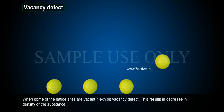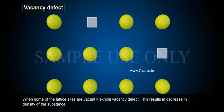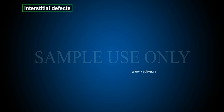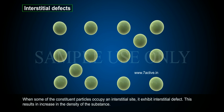Vacancy defect: When some of the lattice sites are vacant, it exhibits a vacancy defect. This results in a decrease in density of the substance. Interstitial defect: When some of the constituent particles occupy an interstitial site, it exhibits an interstitial defect. This results in an increase in density of the substance.